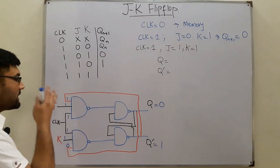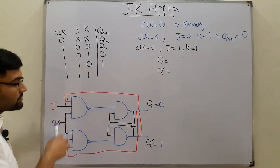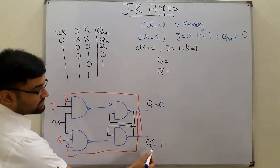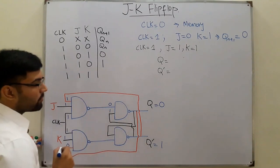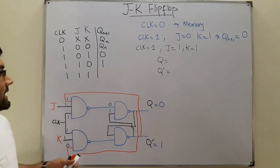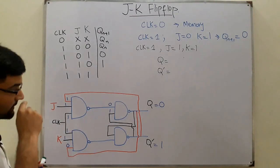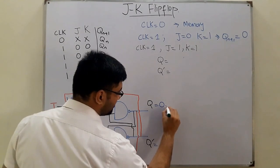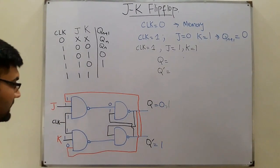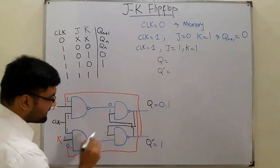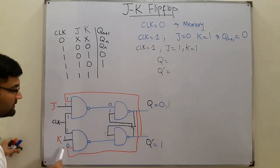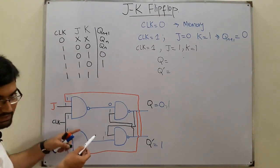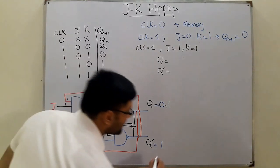When all three inputs — J, Q-complement, and clock — are one, the NAND gate output is zero. Q-complement reflects one at the other gate. With zero and one, the NAND operation gives one, so Q becomes one. This one is fed back: one NAND one gives zero, so Q-complement becomes zero.